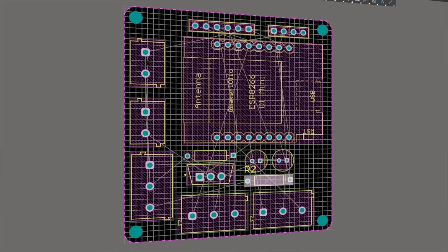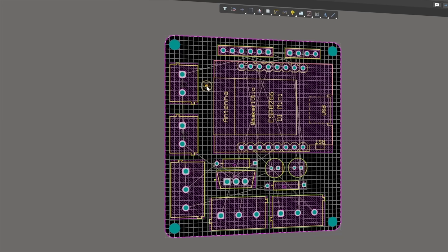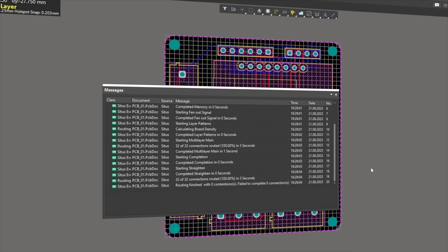After the components were placed on the board, PCB routes were created easily and quickly using AutoRoute, another very useful tool of Altium Designer. The PCB routes took about 3 seconds to complete, and the board is ready.